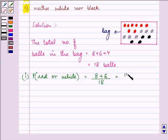That is equal to 14 upon 18, which is further equal to 7 upon 9. So this is the required answer for the first part.